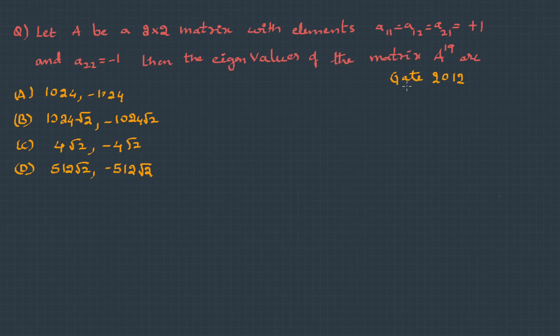Here is a question asked in GATE 2012. Let A be a 2×2 matrix, with elements A11 = 1, A12 = 1, A21 = 1, and A22 = minus 1. Then the eigenvalues of the matrix A power 19 are given. First, let's write the matrix A. A is (1, 1, 1, -1). We need to find eigenvalues for A power 19.